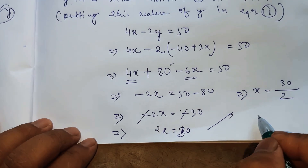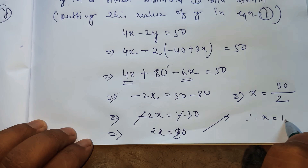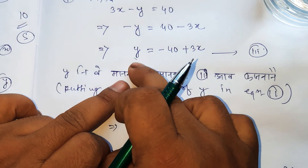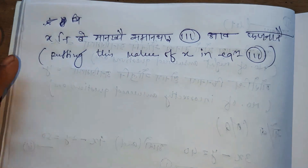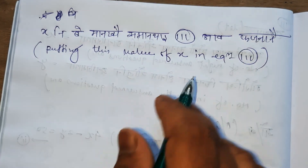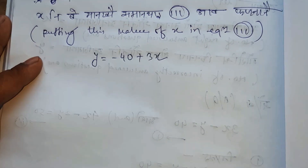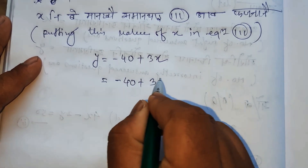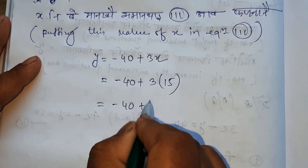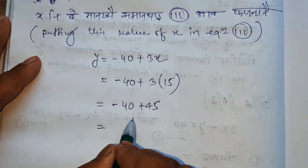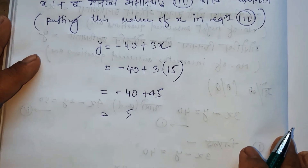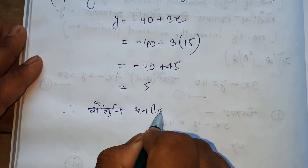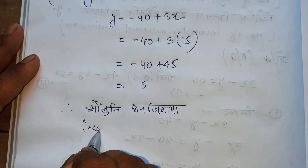So x equals 15. Putting this value of x in equation number 1: 3 times 15 minus y equals 40, giving 45 minus y equals 40, so y equals 5. The total number of questions is x plus y equals 15 plus 5 equals 20.